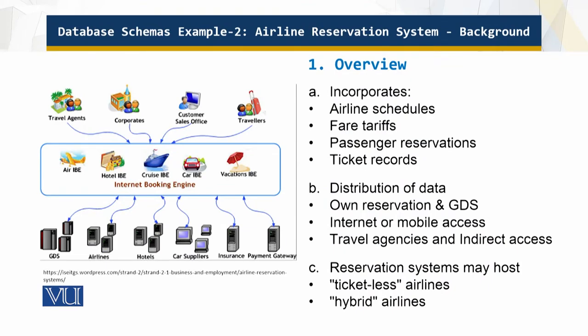The system incorporates airline schedules, fares and tariffs, distribution of data, and the GDS — the Global Distribution System. More specifically, it includes airline schedules, fares, tariffs, passenger reservations, and ticket records. So fare tariffs are there, ticket records are there — it contains many useful things.